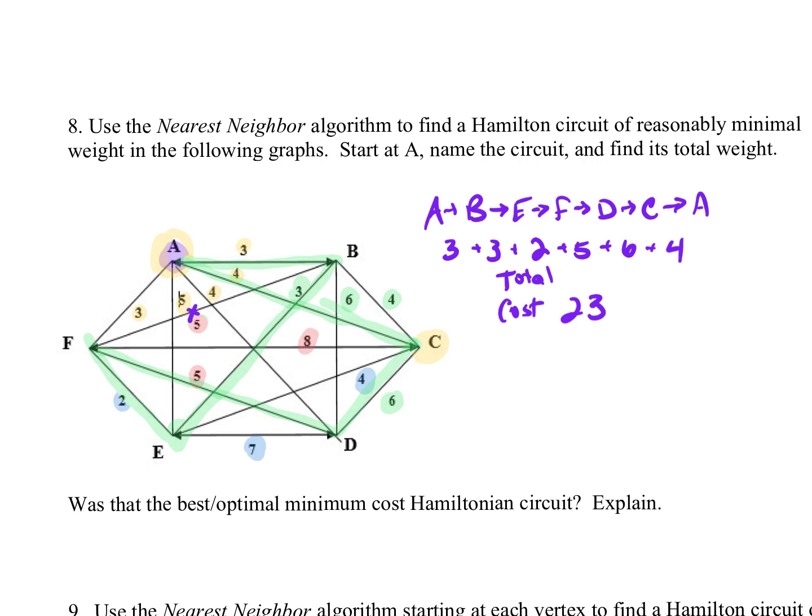So that is my total cost or total weight. If you want to rewrite this to condense it, we went A, B, E, F, D, C, A. That is the solution. That's one of the possible solutions. Is it the best solution? Again, it's a quick and dirty one. We didn't spend much time doing it. Let's look at the follow-up question. It's asking, was that the best optimal minimal cost Hamiltonian circuit? Explain. Was this the best one?